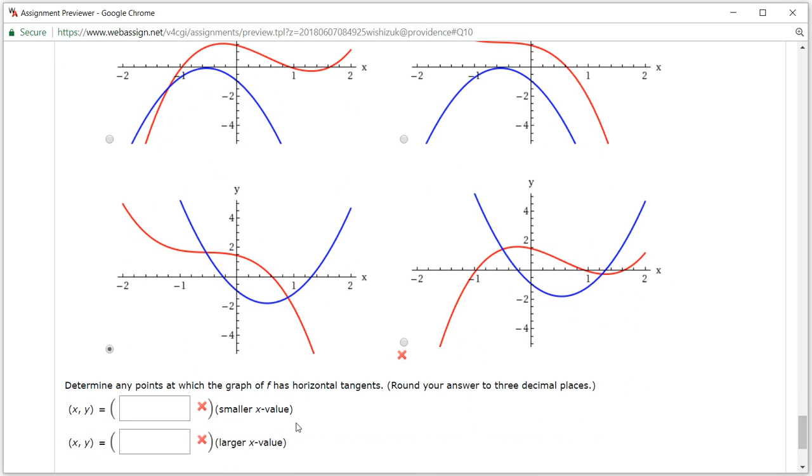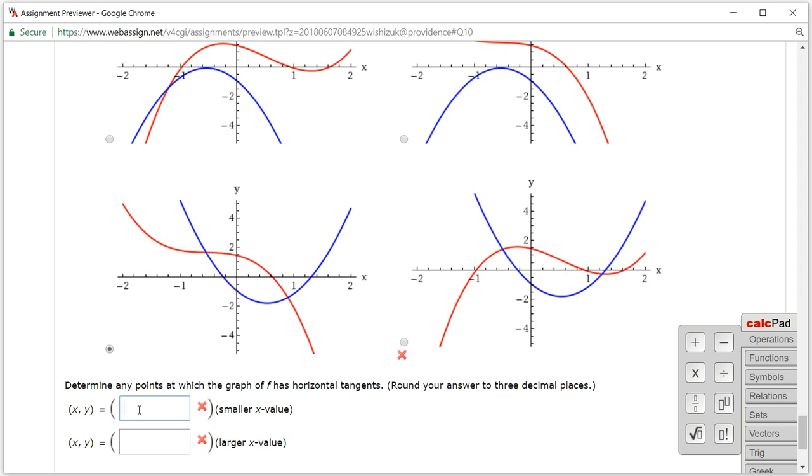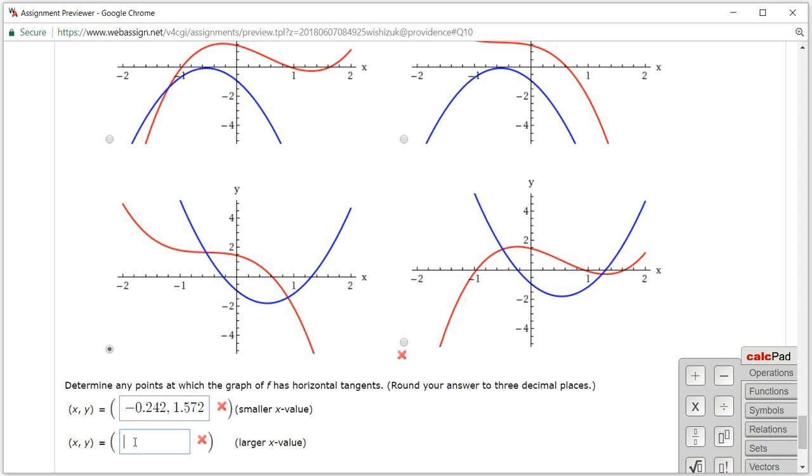So the points we found was negative 0.242, comma, 1.572. And the second point we found is 1.309, comma, negative 0.292.